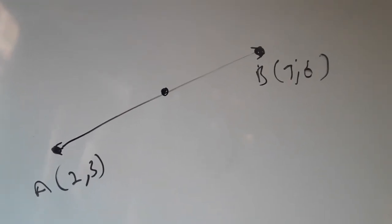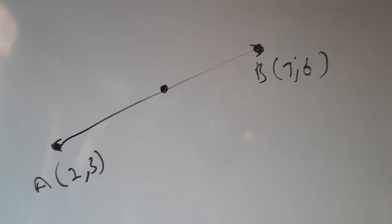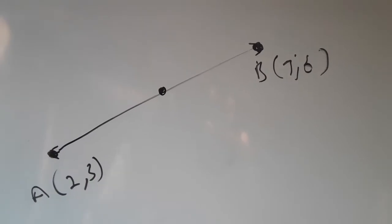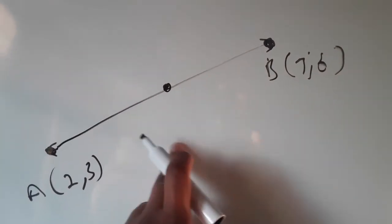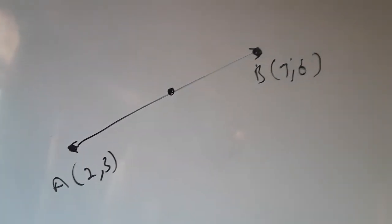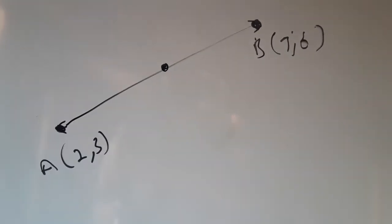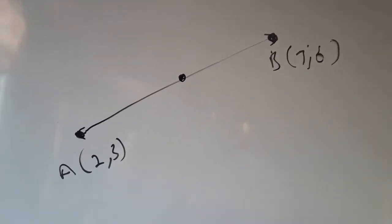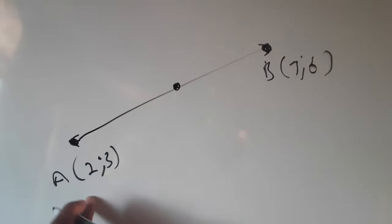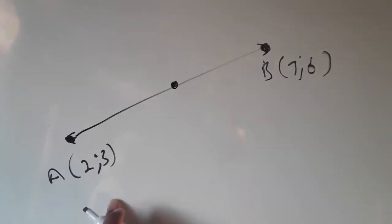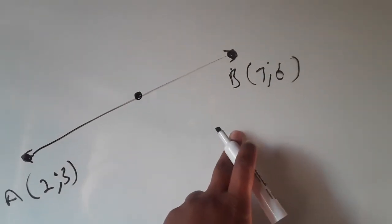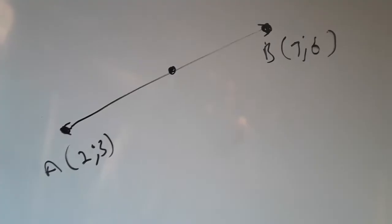We want the midpoint of line AB, so we'll use the midpoint formula. We are given A as (2,3) - that's 2 for the x-axis and 3 for the y-axis - and B as (7,6) - 7 for the x-axis and 6 for the y-axis.